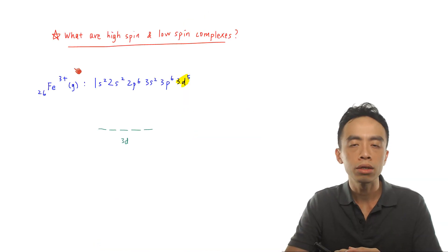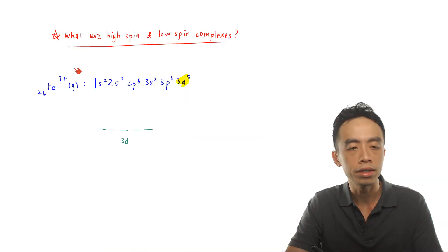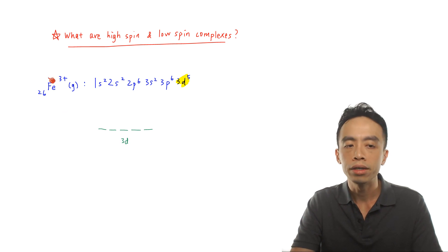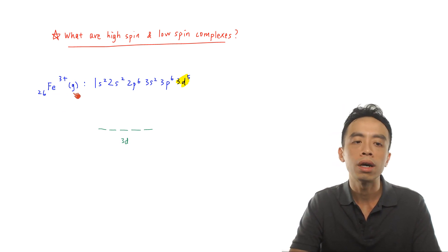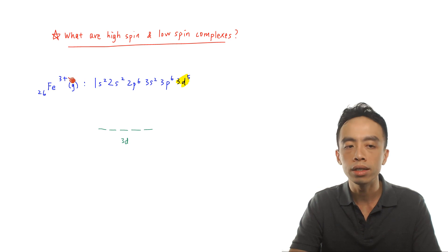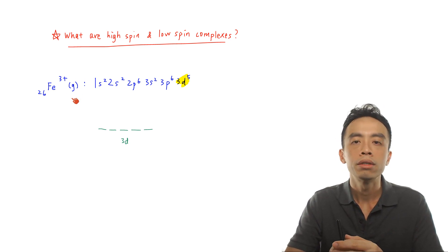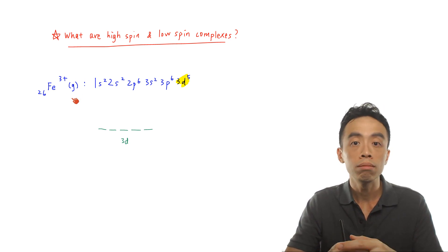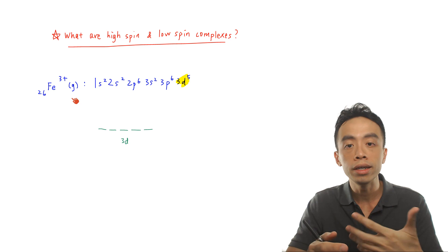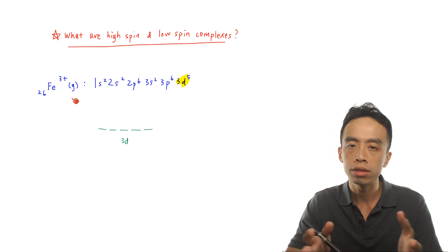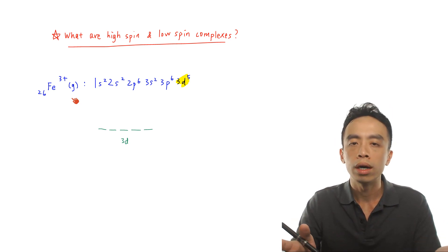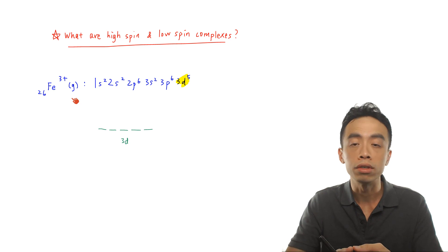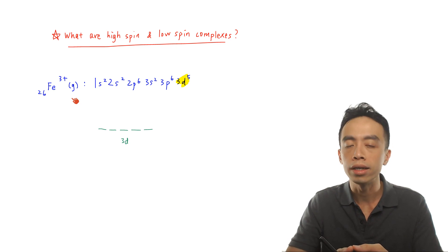Let's start the discussion with something simpler first. Let us consider iron 3+ in the gaseous state. If we have iron 3+ in the gaseous state, it is essentially by itself, not interacting with any ligands, so it is not really a complex.